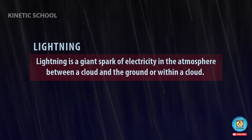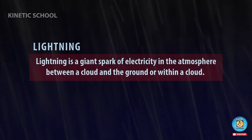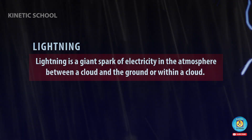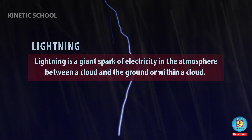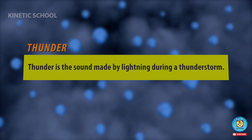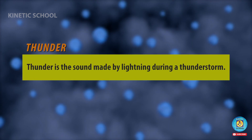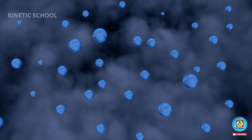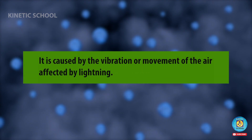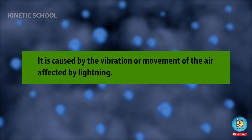Lightning is a giant spark of electricity in the atmosphere, either between a cloud and the ground or within a cloud. Thunder is the sound made by lightning during a thunderstorm. It is caused by the vibration or movement of the air affected by lightning.